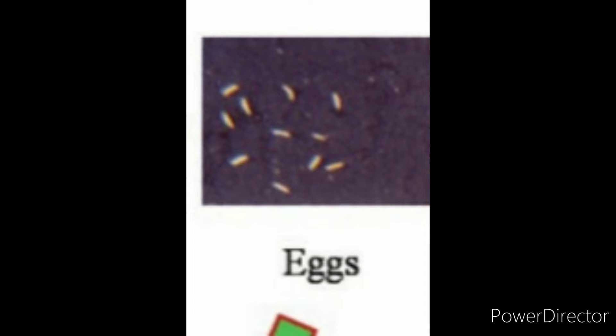First, eggs. Eggs of fruit flies are small, white, and slender. They are laid under the skin of fruits in groups of three to eight eggs, depending on the species. The flies lay eggs on mature green and ripening fruit. Some species may lay eggs in unripe fruitlets. Eggs hatch within one to two days.